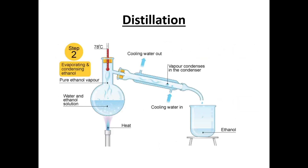The second thing is distillation, which is a separating method from chemistry. A water and ethanol solution is heated, giving out pure ethanol vapor that evaporates and condenses at about 78 degrees. Cooling water condenses the vapor in the condenser, and you get the pure form of ethanol.